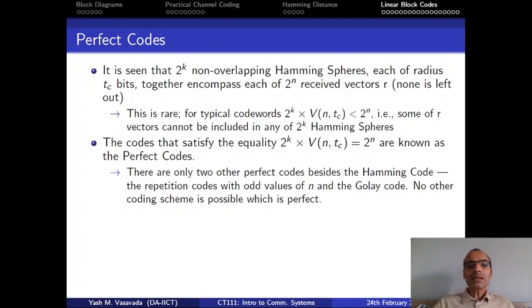Now, that is quite rare. It is quite unusual that that happens. Basically, what we just now saw was that if I take the totality of all 2 to the power k non-overlapping Hamming spheres, each of radius tc equal to 1 bits, together they include each one of 2 to the power n received vectors. None of the 2 to the power n possible received vectors gets left out. In fact, for typical schemes, 2 to the power k times V(n,tc) will not be equal to 2 to the power n. It will be less than 2 to the power n. And that happens because some of the possible received vectors cannot be included in any of the 2 to the power k Hamming spheres of radius tc bits.